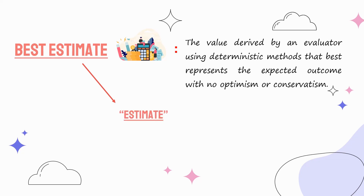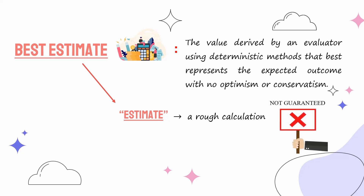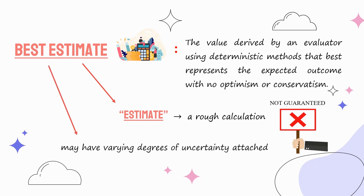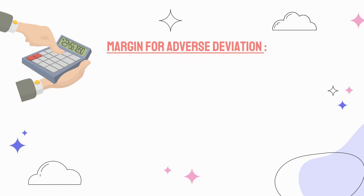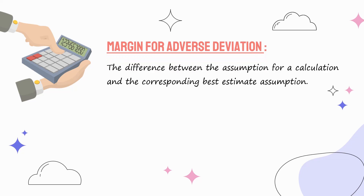The term estimate without further qualification is undemanding — just a rough calculation. There is normally no guarantee that an estimate will prove adequate or inadequate. In addition, the best estimate itself may have varying degrees of uncertainty attached. This involves using estimates that are believed to be worse than a central or best estimate: the margin for adverse deviation.